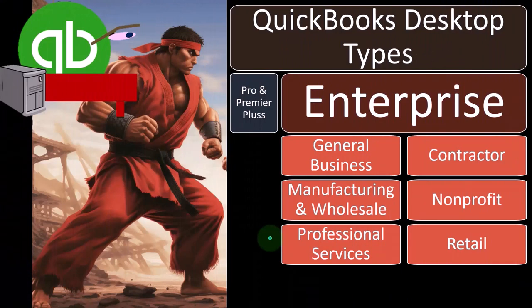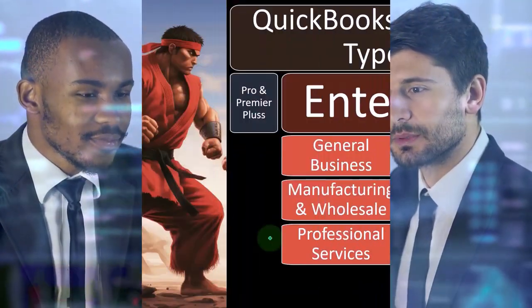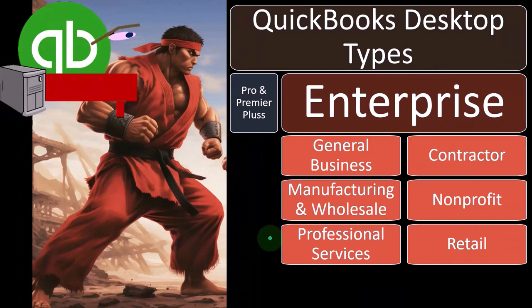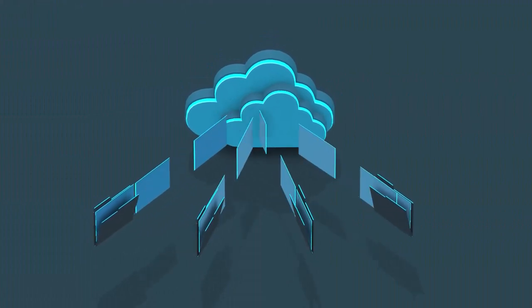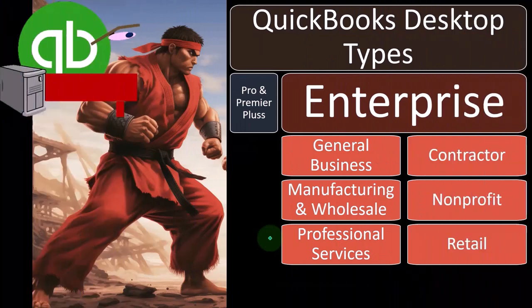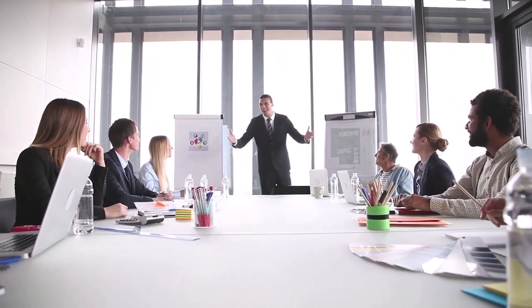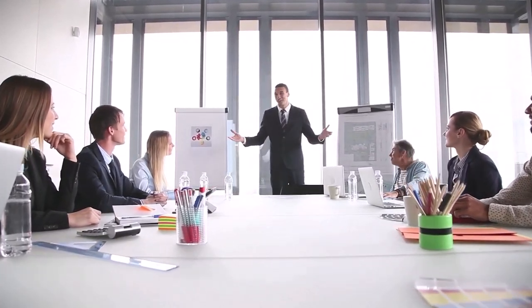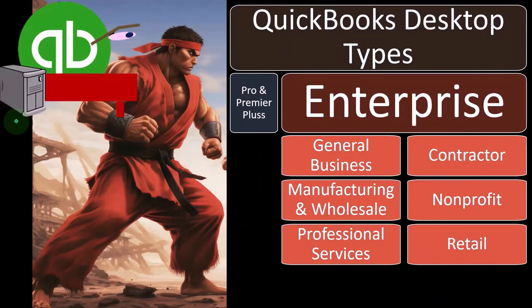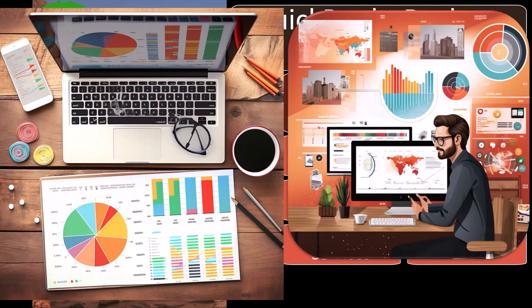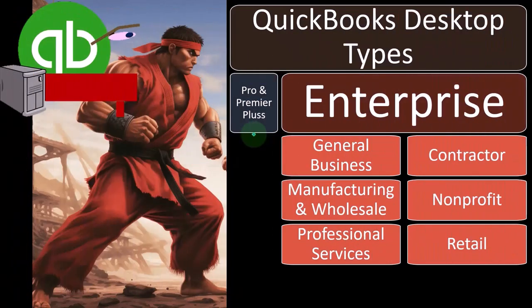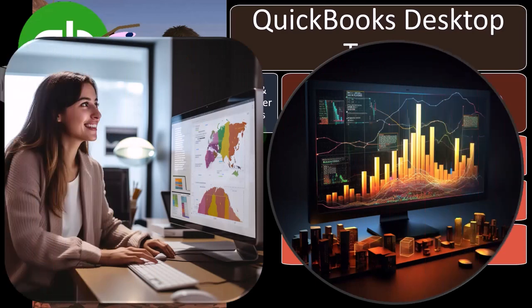The general decision tree when thinking about the software is: first, what company do I want to work with — Intuit versus other providers? Then, do I want online cloud-based software or desktop software? Do I want the software on my computer or on the cloud? You can apply that question across different companies like Intuit versus others, comparing cloud-based versus desktop. Desktop versus cloud-based are very different — almost like completely different software, almost as though they were from different companies, because they have a very different look and feel, although they share the same general functionality.